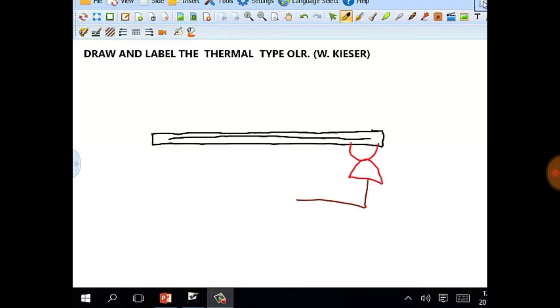Let's label this thermal type overload relay fully. Remember, there are four main parts to this diagram.